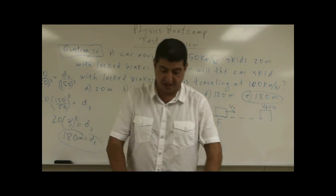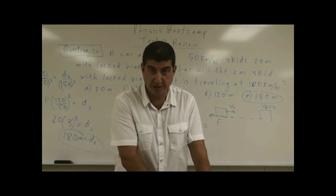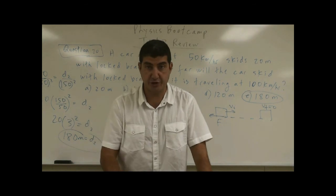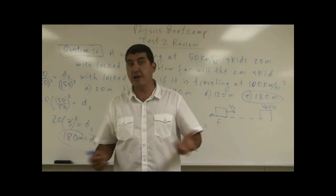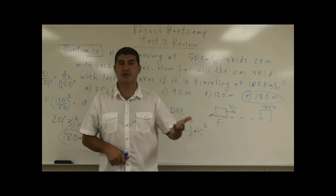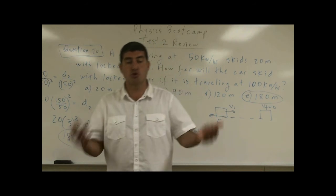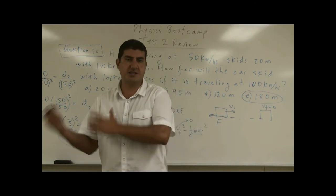Usually they kind of teach you this in the driving school. They say that for every time you double the speed, you go four times as much. Right? That's why in the freeways it's dangerous to go faster because when you're going faster, the distance, the stopping distance is increasing proportionally to the velocity squared.